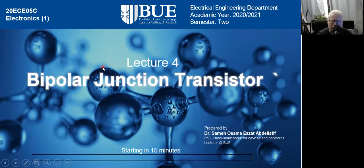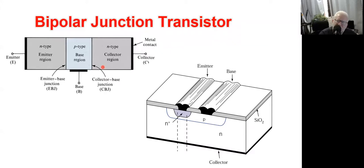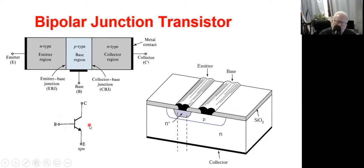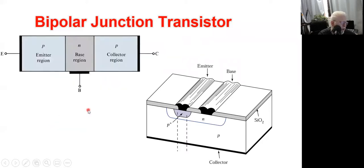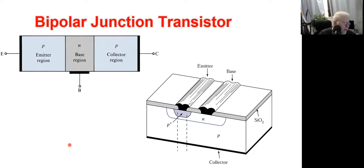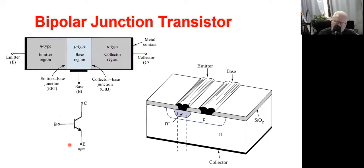Let's first remember together: what is the Bipolar Junction Transistor? The BJT is formed of two PN junctions. We have the NPN transistor and the PNP transistor. You can differentiate between NPN and PNP by recognizing the direction of the current. In NPN, the current flows from the collector and terminates at the emitter. For PNP, it's vice versa — current flows from the emitter and terminates at the collector. We are going to consider the NPN in our current study.